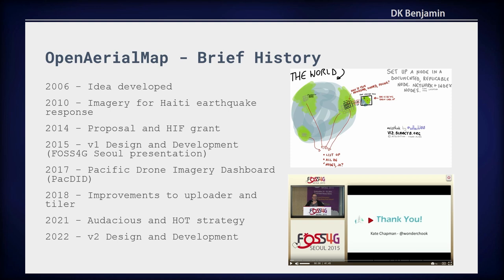Since then, many other organizations and people have contributed — they are on the OpenAerialMap website About page. Since then there have been some small improvements, but pretty much what we have in OpenAerialMap is what we built in 2015, 2016, and 2017, so it's a little bit outdated. In 2021, we were able to secure some funding to work on a redesign of OpenAerialMap, and that's where we are today.